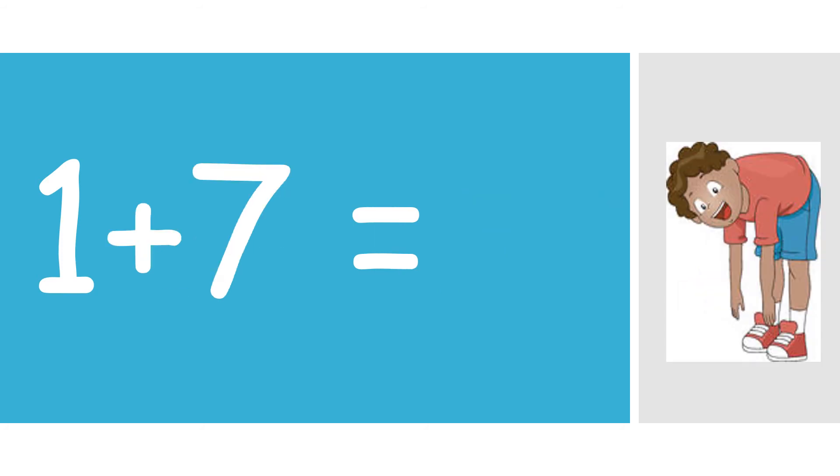1 plus 7. Here's another counting on 1. Start with the bigger number, which is 7, and count on 1. 7 plus 1 equals 8. Do 8 toe touches.